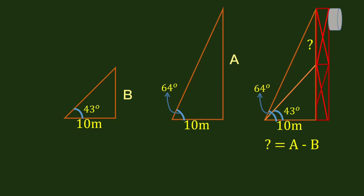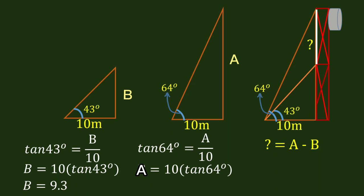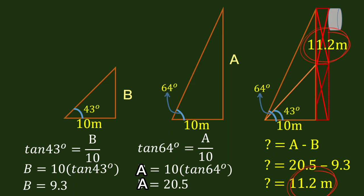We will find A and B using the angle of elevation concept. Let us begin with the smaller triangle. Tangent 43 degrees is equal to B over 10 meters, and B is equal to 10 times tangent 43 degrees. Using the calculator, B is equal to 9.3 meters. Using the bigger triangle, tangent 64 degrees is equal to A over 10 meters. Using the calculator, A is equal to 20.5 meters. To find the unknown, we subtract A by B: 20.5 minus 9.3. The unknown part is equal to 11.2 meters.